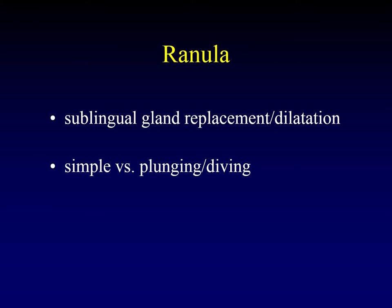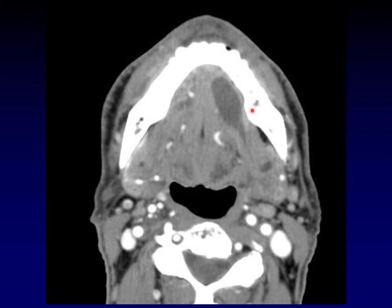A ranula is replacement of the sublingual gland by a dilated duct and atrophy of the gland. It comes in two forms: a simple ranula, which stays within the floor of mouth, and a plunging (or diving) ranula, which extends from the floor of mouth down into the submandibular triangle. Here's an example of a simple ranula — this cystic lesion is in exactly the location you'd expect the sublingual gland to be, elongated along the lingual surface of the mandible and replacing the normal tissue of the gland itself.